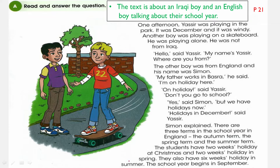Because in Iraq we have school in December, Simon explained the school year in England. There are three terms in the school year in England — 'terms' refers to specific periods, which can be study periods. The autumn term — the autumn study term — the spring term, and the summer term. Students have two weeks holiday at Christmas and two weeks holiday in spring.